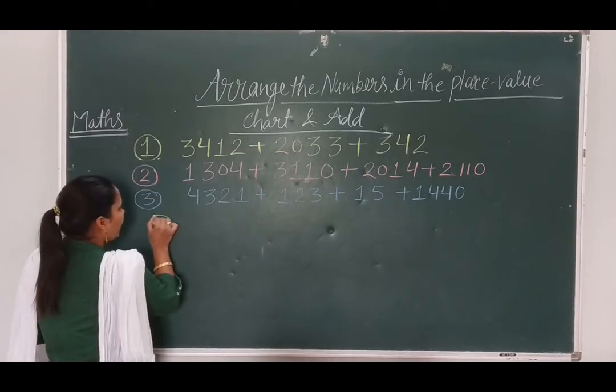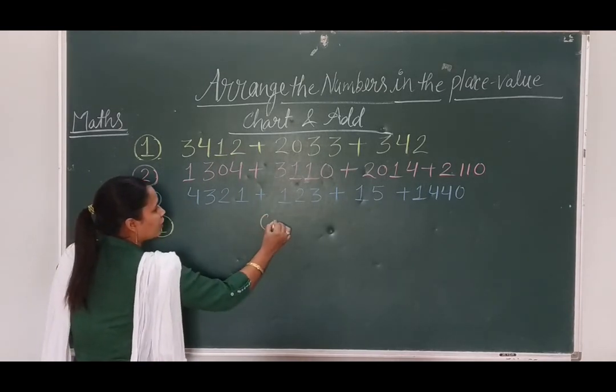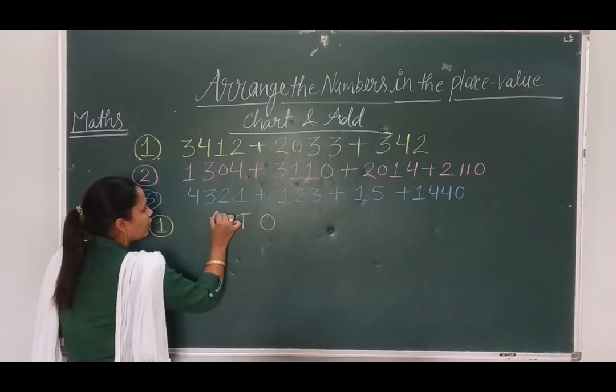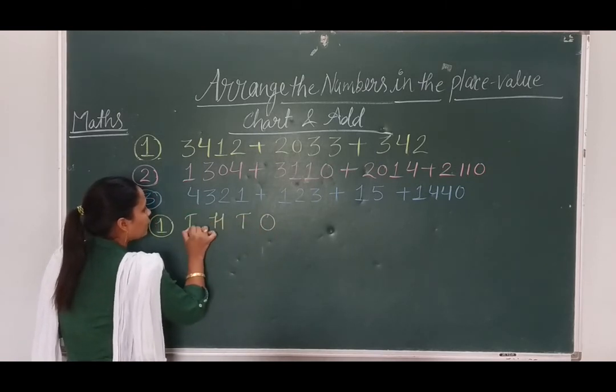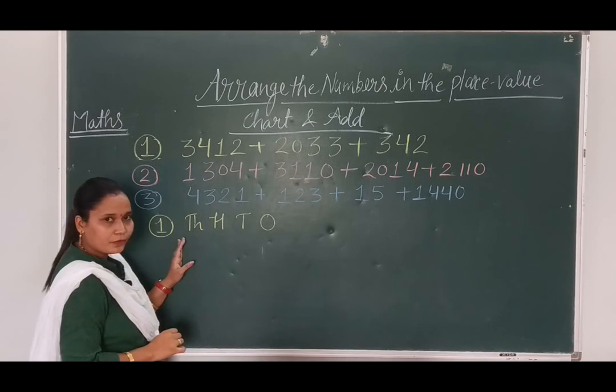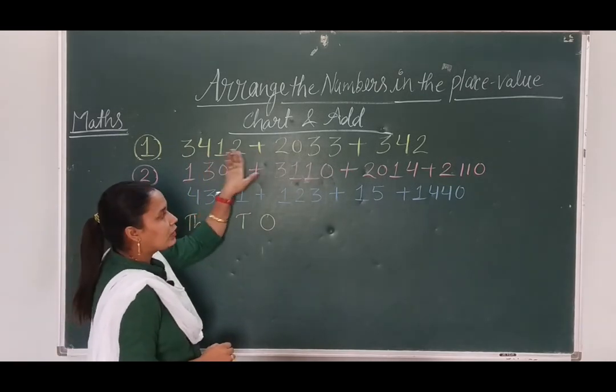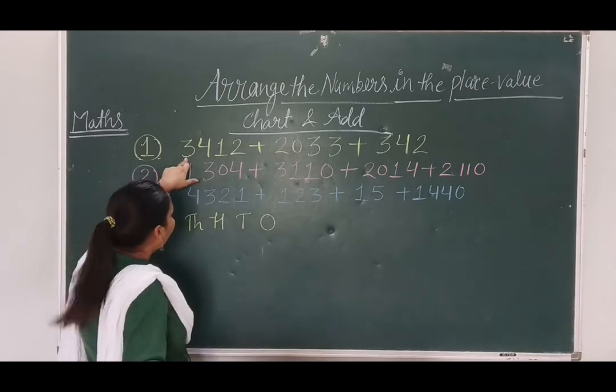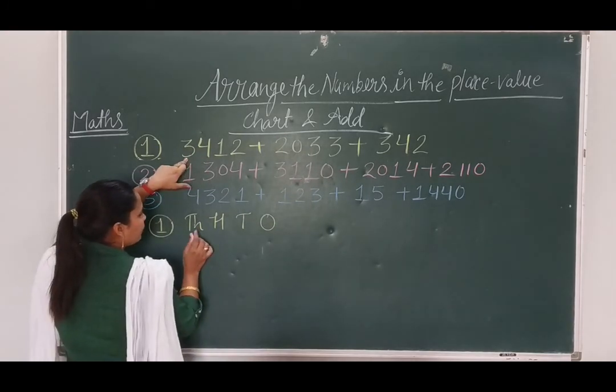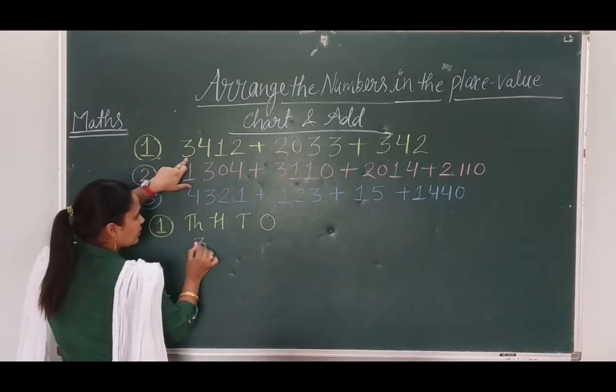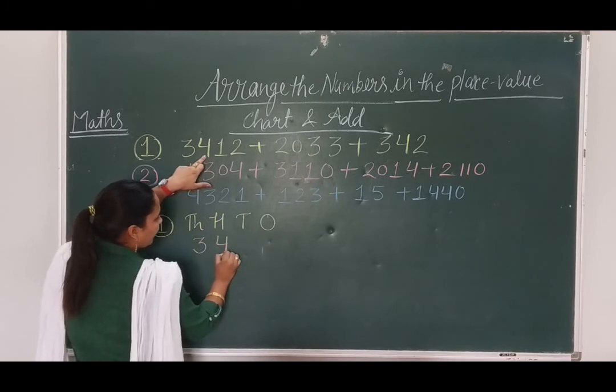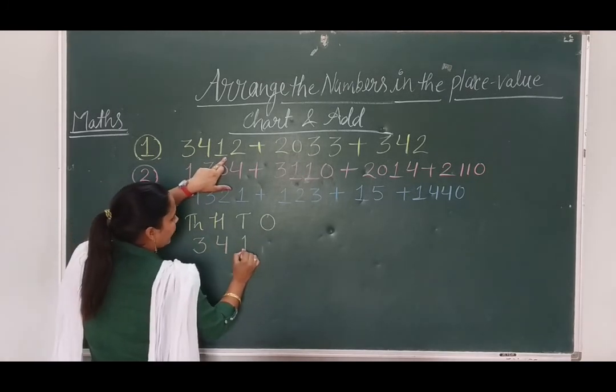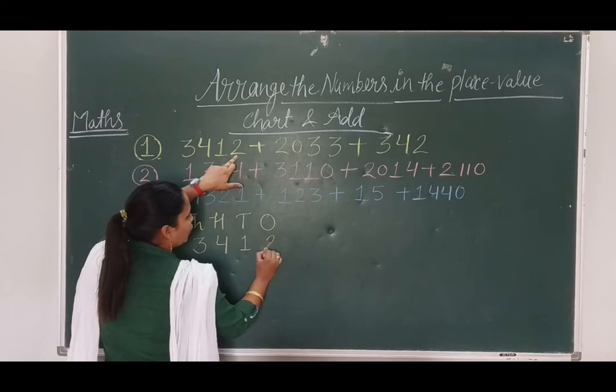So, first we have to write place value. Ones, tens, hundreds, thousands. Then after, we have to write these digits. Our first digit is 3412. 3 means 1000 place, 4, 100, 1, tens, and 2, ones.